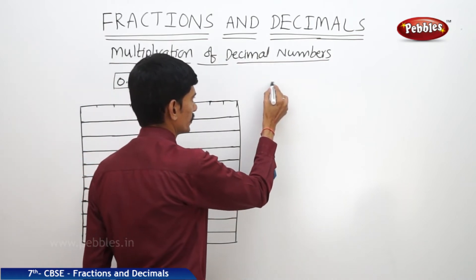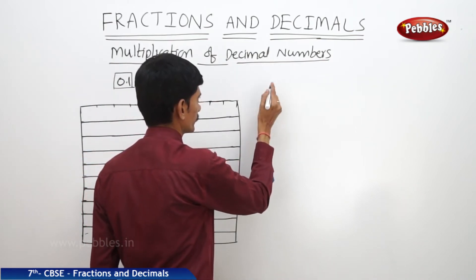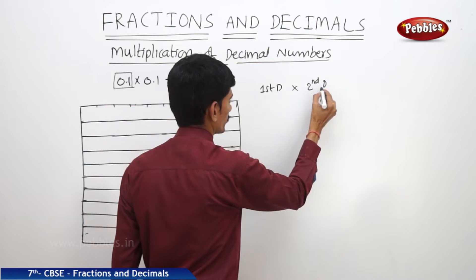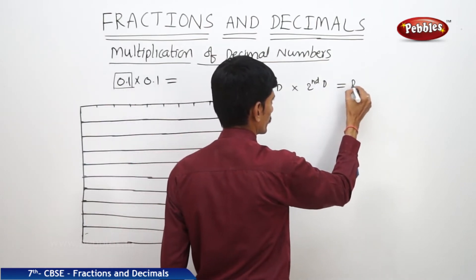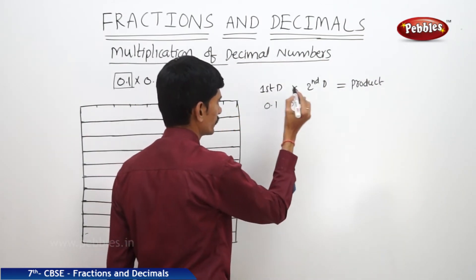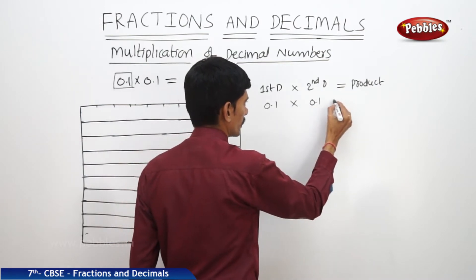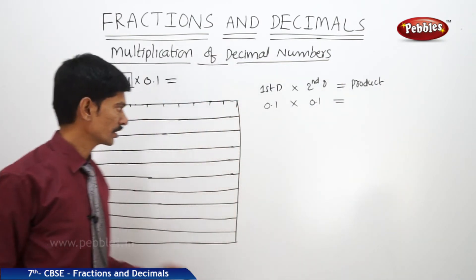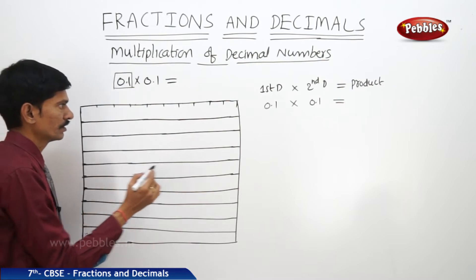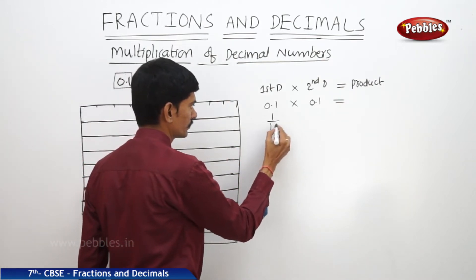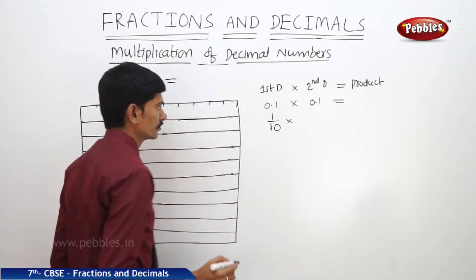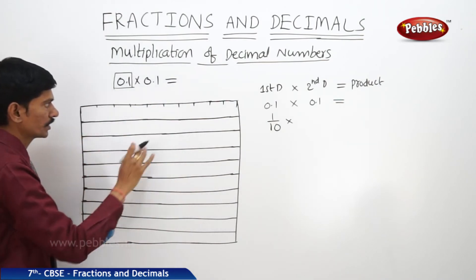Here, we will take the first decimal into the second decimal, then we will find the product. The first decimal is 0.1 into again the second decimal 0.1. So, the horizontal rectangles represent the first decimal 0.1. So, 0.1 can be written as 1 by 10 — one part out of ten equal parts.